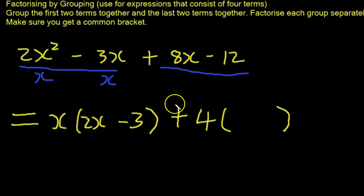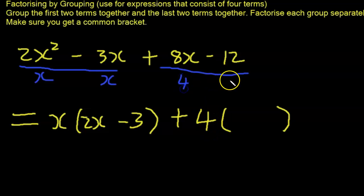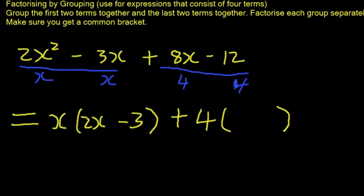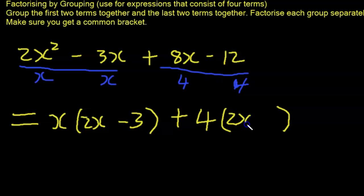We divide both terms by the highest common factor, which is 4. So 4 into 8 gives 2, hence 2x. And minus 12 divided by 4 gives minus 3. So the second group factors to 4(2x minus 3).